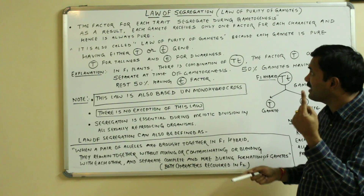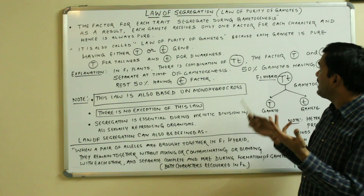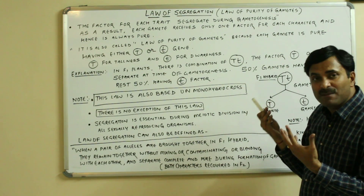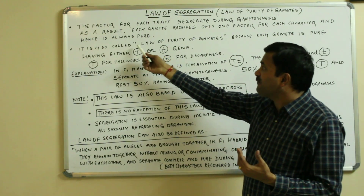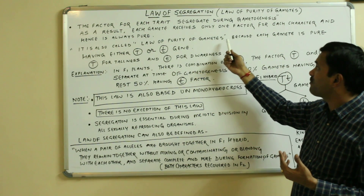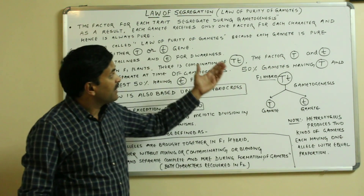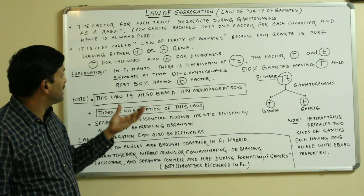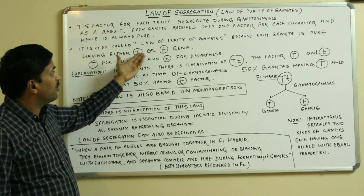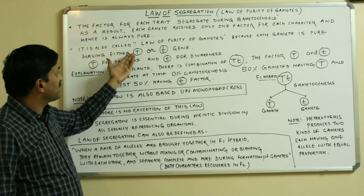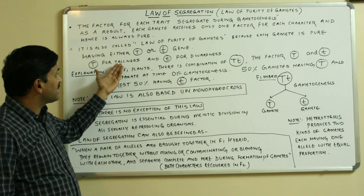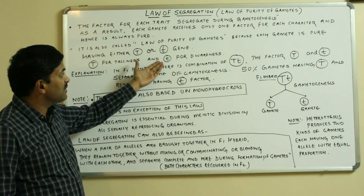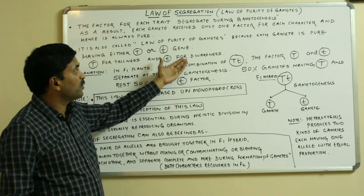Because each gamete is receiving only one factor, it will be bearing only one character, and so it will always be pure. That is why this law is also called the law of purity of gametes — each gamete is pure for any particular character or trait. For example, capital T or small t: the gamete bearing capital T will be pure for tallness.